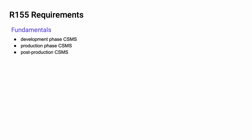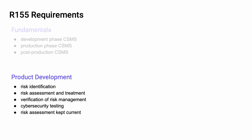Implementation of R155 can be divided into four areas. The first is fundamentals, concerned with management systems. These systems track and document the evidence we have for the various activities we do. Management systems are expected to exist for development, production, and post-production activities. The second area is product development. In this area, we deal with risk identification, assessment, and treatment, the verification of the management of risk, cybersecurity testing, and most importantly, the freshness of the risk assessment.